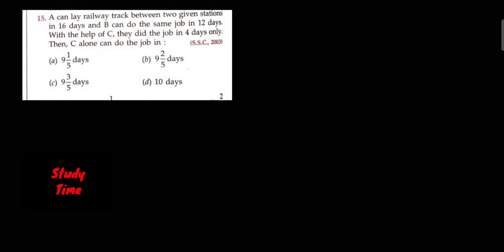Question number 15: A can lay railway track between two given stations in 16 days and B can do the same job in 12 days. With the help of C, they did the job in 4 days only. Then C alone can do the job in? SSC 2003.